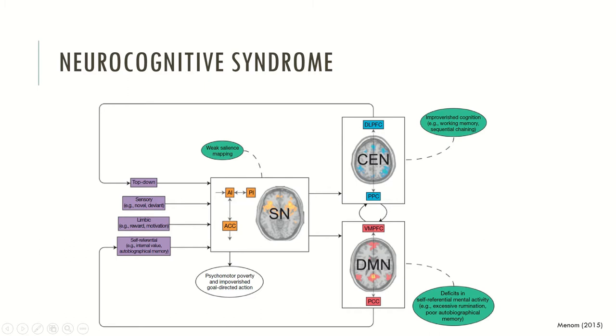There are also impairments in the precuneus, in the ventromedial prefrontal cortex and in the posterior cortex. As you can see, this model helps us understand how the neurocognitive syndrome may be developed in the brain. The neurocognitive syndrome seems to reflect the association of several psychological symptoms typically linked with these complex neural networks.